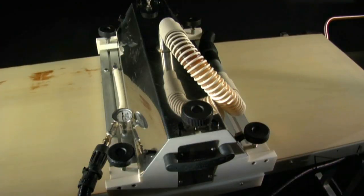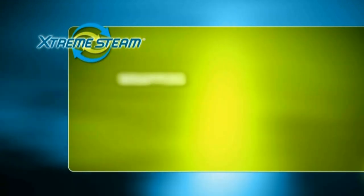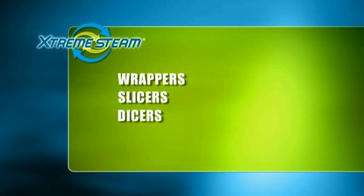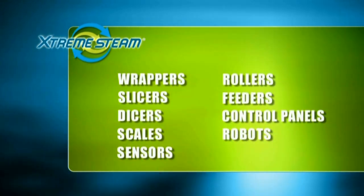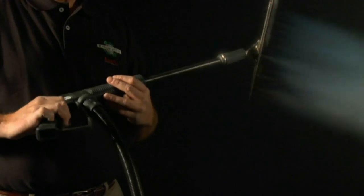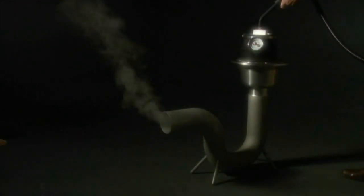The Extreme Steam Industrial Solution System cleans and sanitizes most anything, and in the most hard to reach places. Wrappers, slicers, dicers, scales, sensors, rollers, feeders, electrical control panels, even robots, all become microorganism free without the use of contaminating chemicals. It can even sanitize your drains in seconds, chemical free.